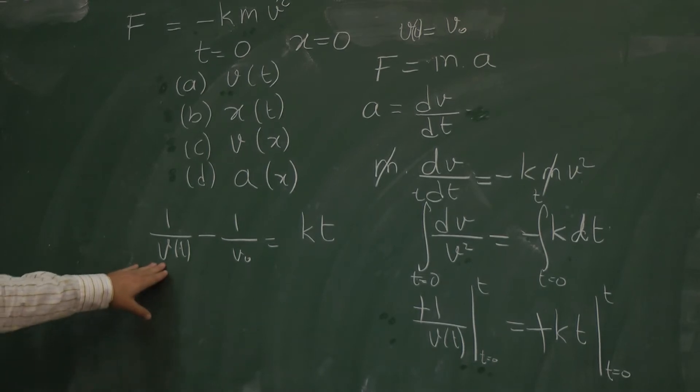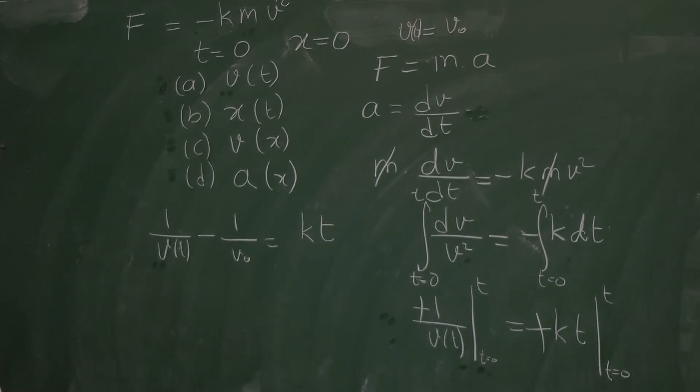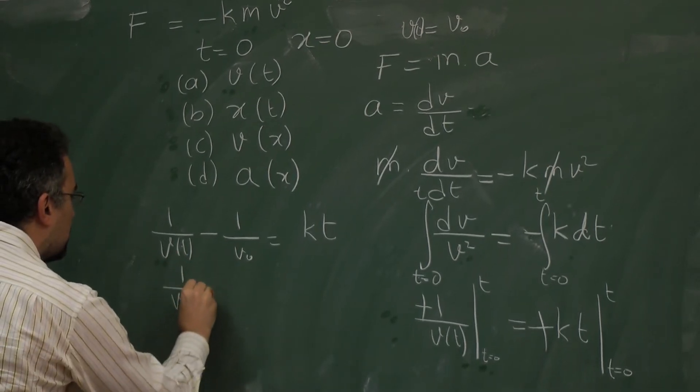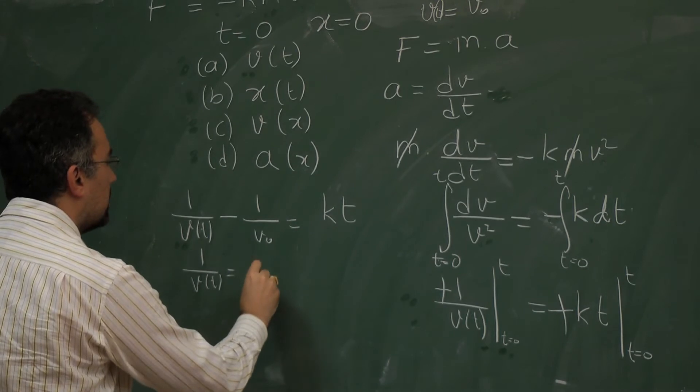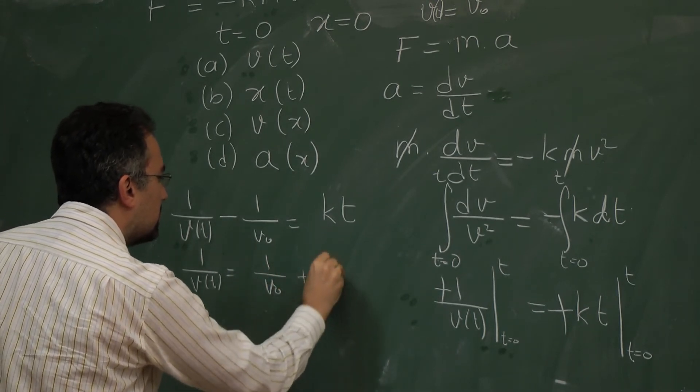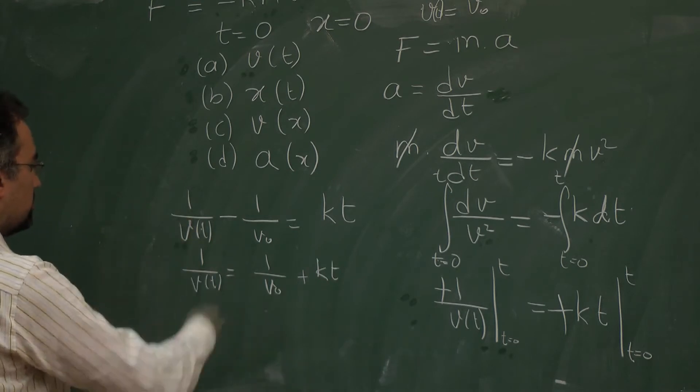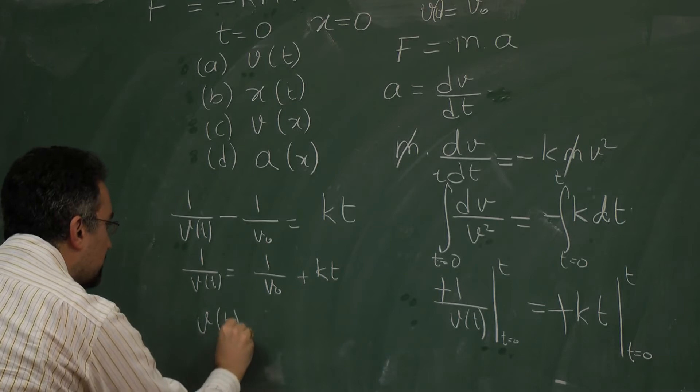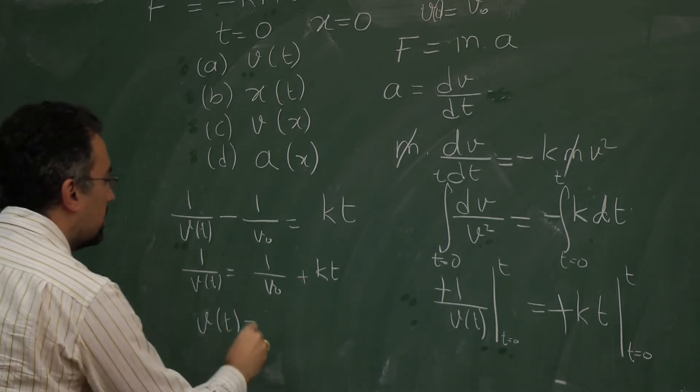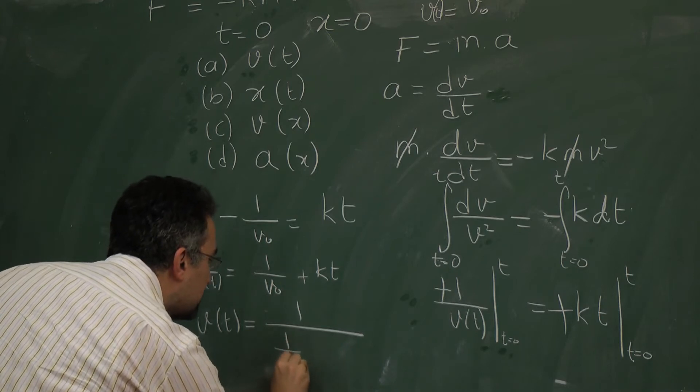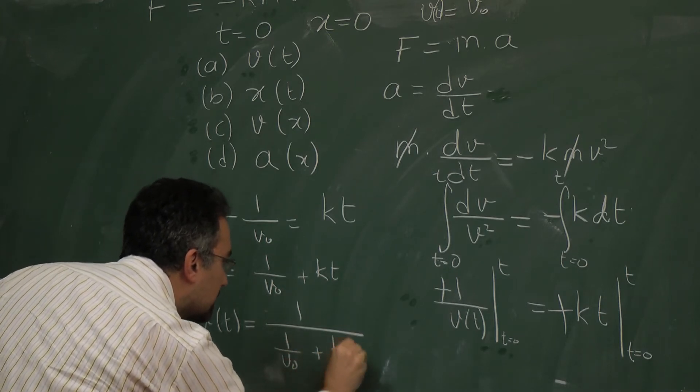If I try to get v of t out of there, 1 over v of t equals 1 over v0 plus k t. So if I invert both sides I get v of t equals 1 over (1 over v0 plus k t).